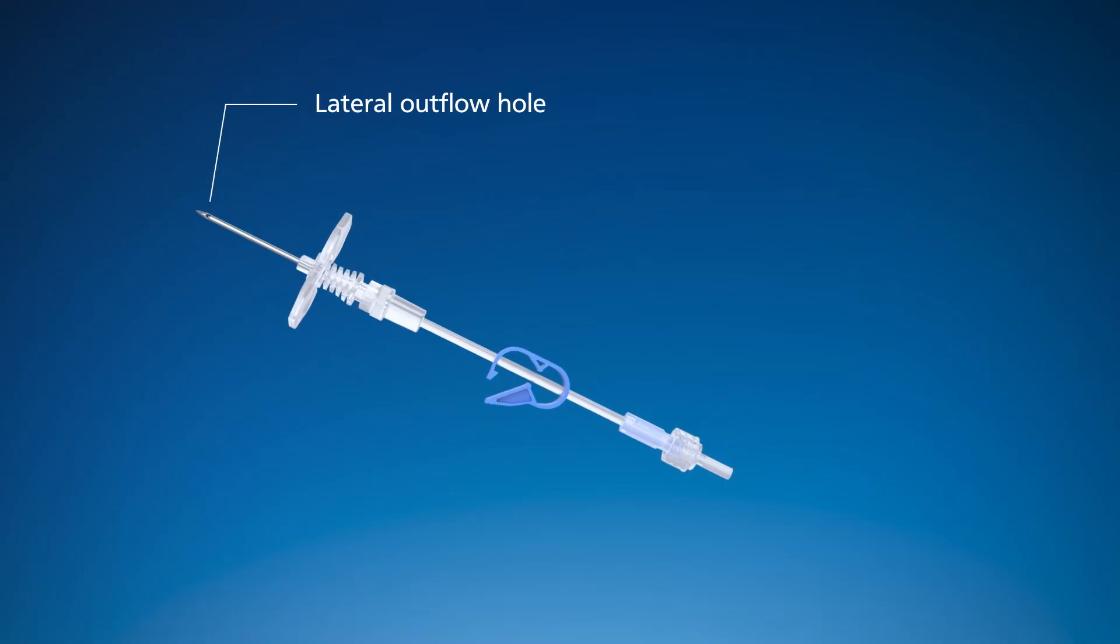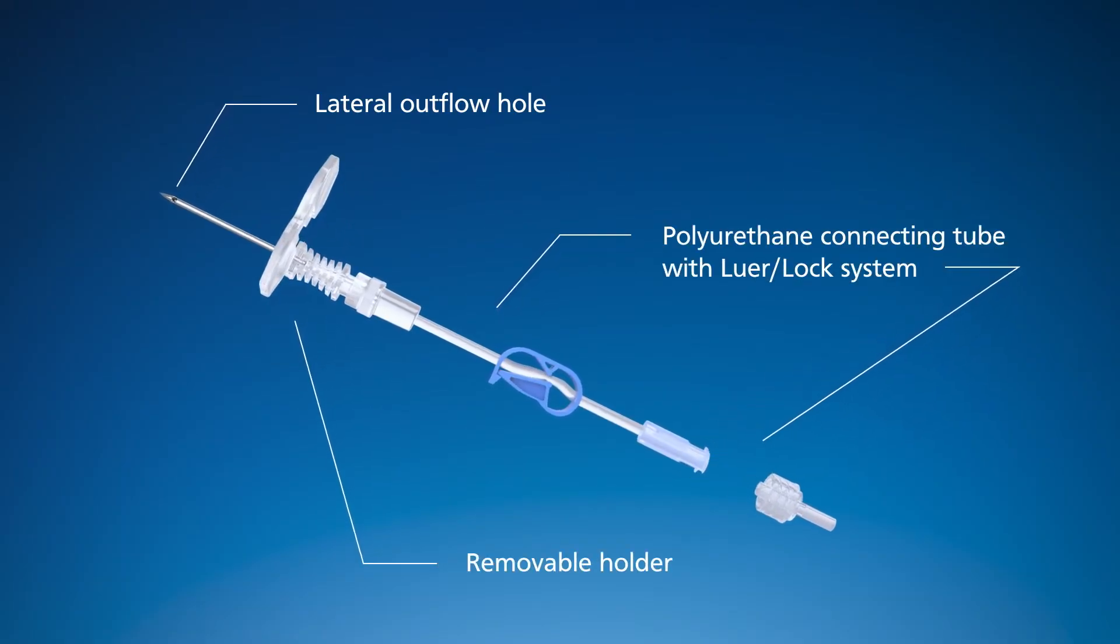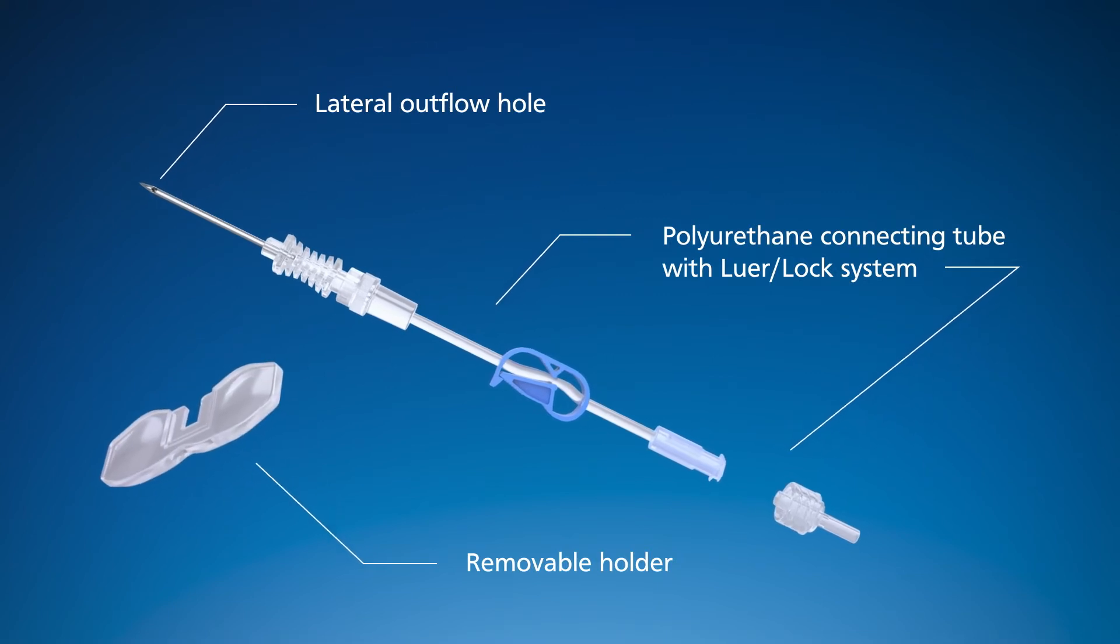The port needle has a lateral outflow hole, a connecting tube with a luer lock system, and a removable holder for a simplified puncture.